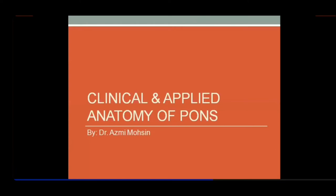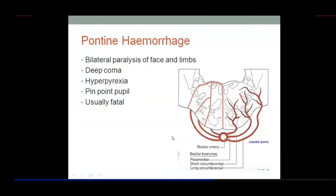I will teach you about the clinical and applied anatomy of the pons. In intracranial portions, lesions are mostly related to tumors, hemorrhages, blood vessel infarcts, ischemia, or sometimes abscess and infections — these are the main reasons for intracranial lesions.